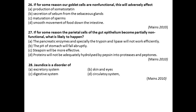Proteins will not be adequately hydrolyzed by pepsin into proteoses and peptones. So option D is the right answer, because pepsin should act on proenzymes and the HCl required for that is produced by the parietal cells. So option D is right for this question.